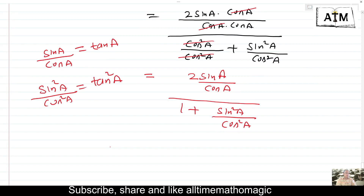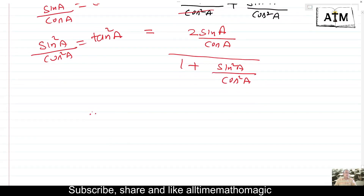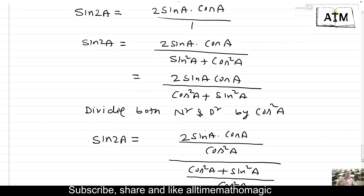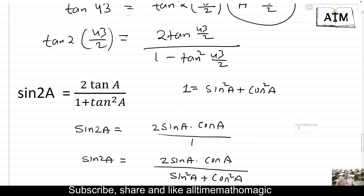Therefore, sin 2a equals to 2 tan a upon 1 plus tan square a. Thus, sin 2a equals to 2 tan a upon 1 plus tan square a has been proved.